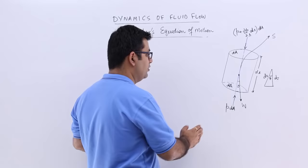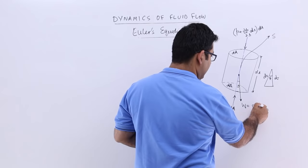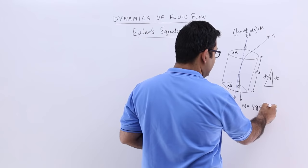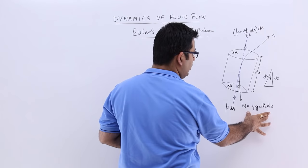Let's say that the density of this fluid is rho. So this would be rho into g, that's the specific weight, into the volume, which would be dA into ds. The motion is happening in that direction and you have some forces in the downward direction and some forces in the upward direction.